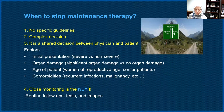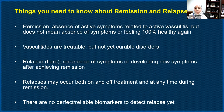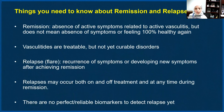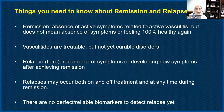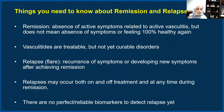To summarize: remission means absence of active symptoms related to active vasculitis, but does not mean absence of all symptoms or feeling 100% healthy — it does not mean cure. Vasculitides are treatable but not yet curable disorders. Unfortunately, relapse or flare means recurrence of symptoms or appearance of new symptoms after achieving remission, and may occur on or off treatment at any time — a month, two months, a year, or five years after. There are no perfect biomarkers to detect relapse yet.